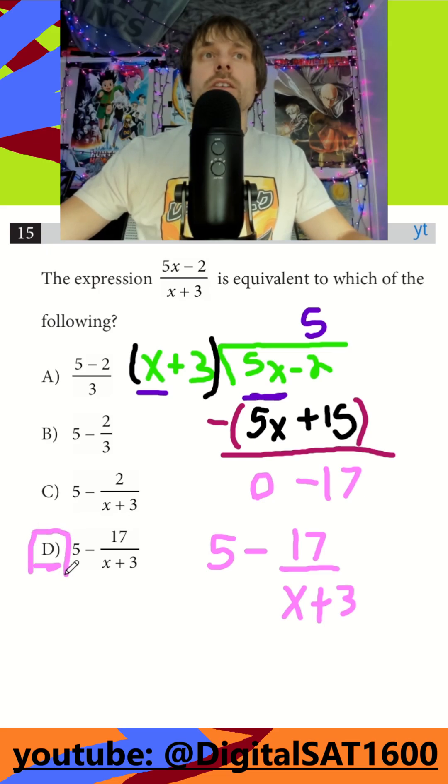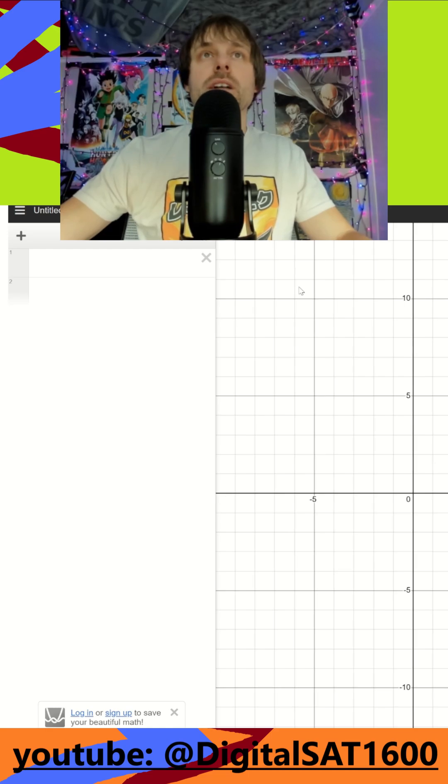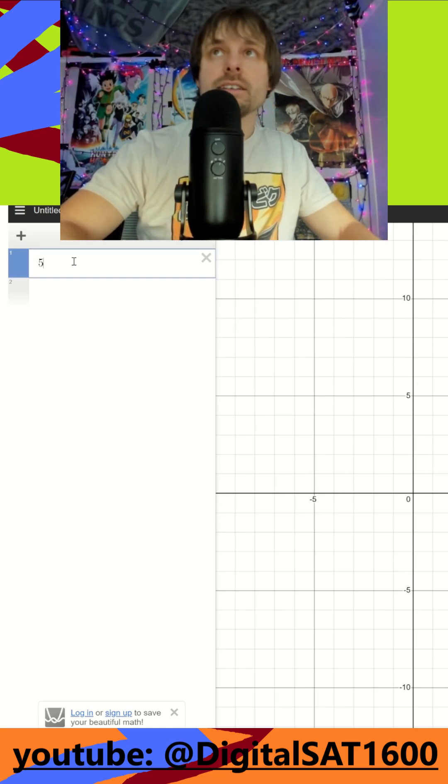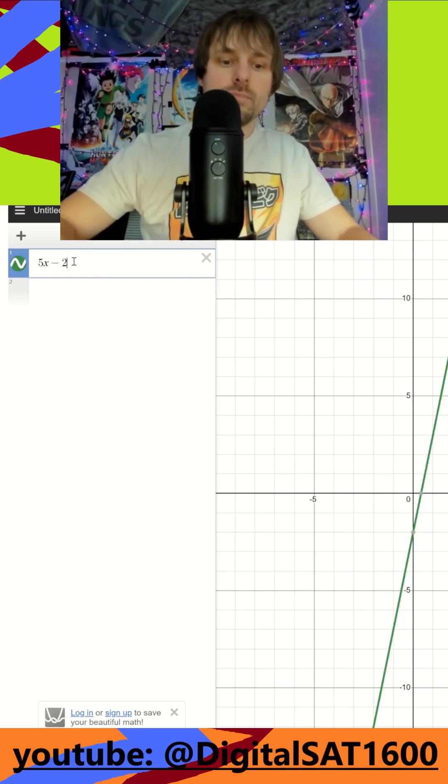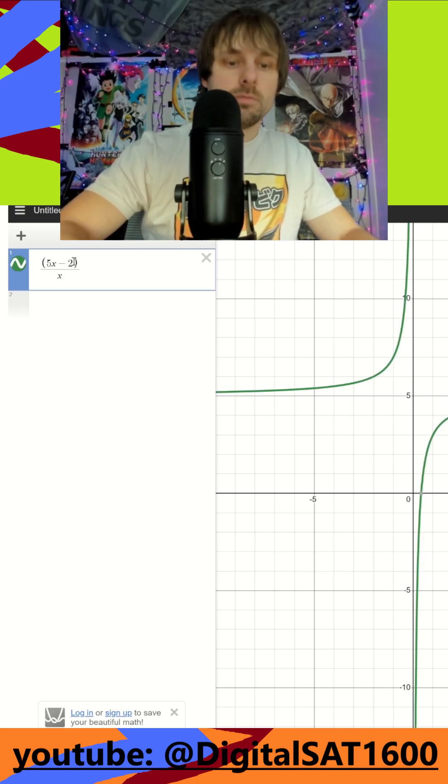But what's nice on the SAT is you can just use Desmos. So real quick, I'll pull up Desmos and I'm just going to plug in my function here. So we're going to do 5x minus 2 divided by parentheses divided by x plus 3.